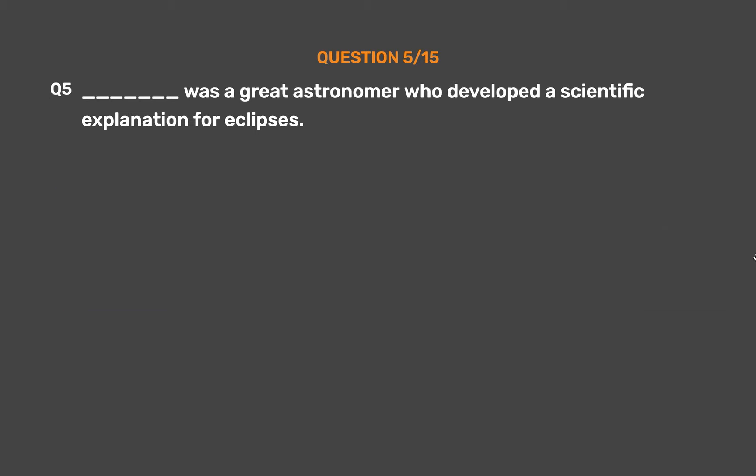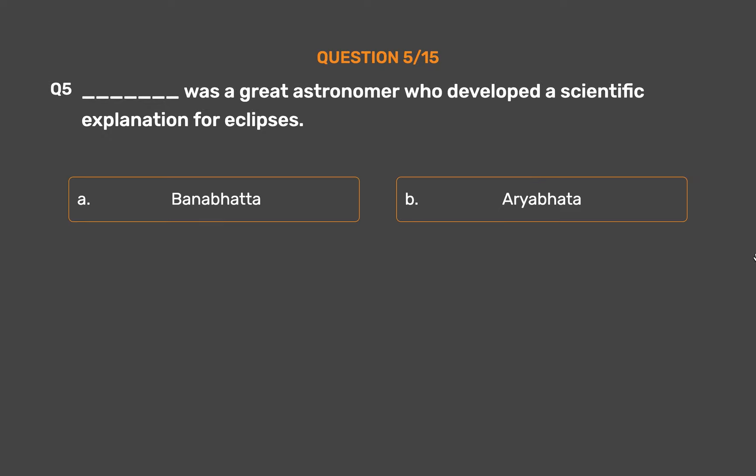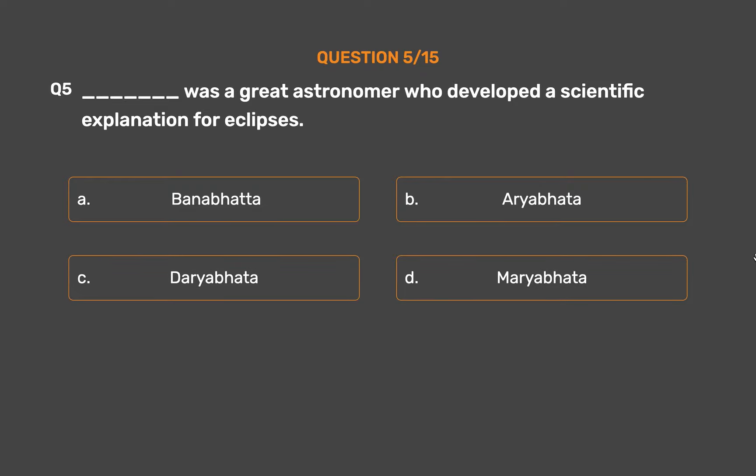Question No. 5. This person was a great astronomer who developed a scientific explanation for eclipses. Option A: Bana Bhatta. Option B: Aryabhata. Option C: Darya Bhatta. Option D: Maryabhata.